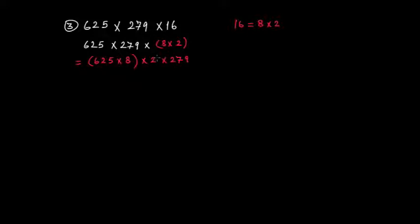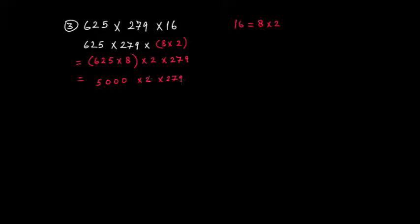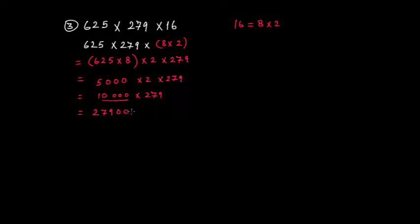For changing the order, we use the commutative property, and for changing the grouping we use the associative property. So here, 625 × 8 = 5000, then 5000 × 2 = 10,000, and 10,000 × 279 gives 279 followed by four zeros. The answer is 2,790,000.